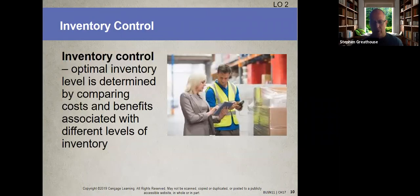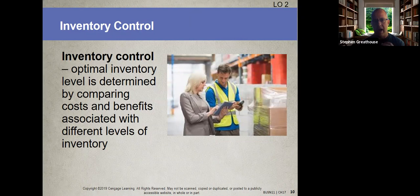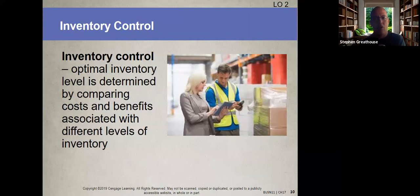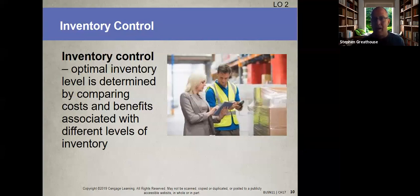Inventory control is a major part of operations management. Manufacturing companies hold inventories of not just finished goods, but also raw materials and component parts made by other companies, so that the production process has a smooth flow and always has enough parts at each stage. Some stages of the production process take longer than others, which adds further complexity.